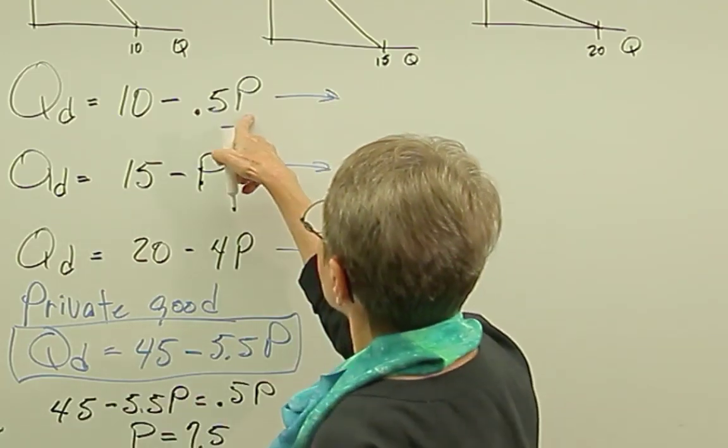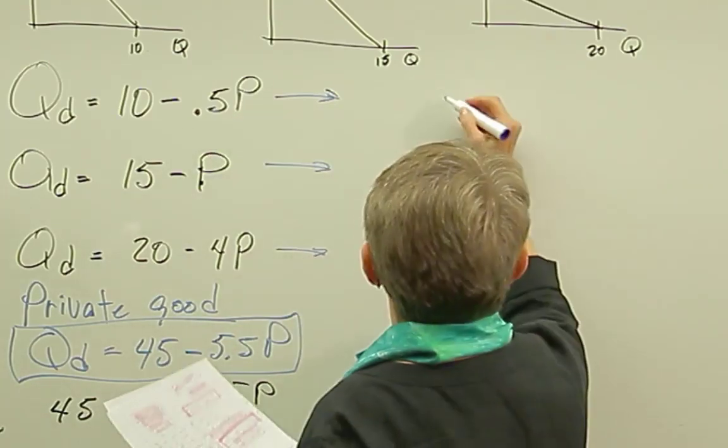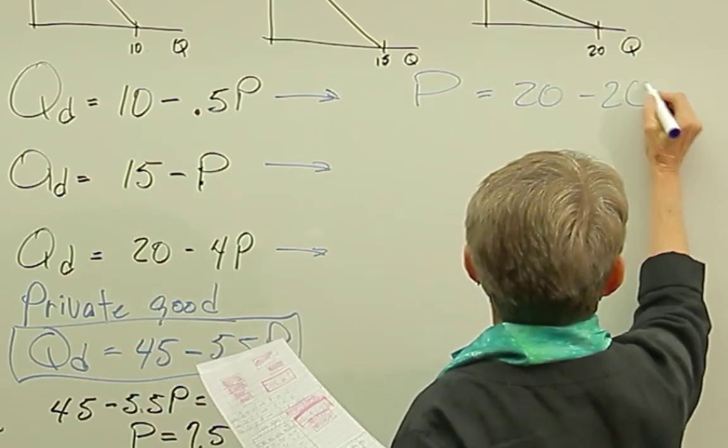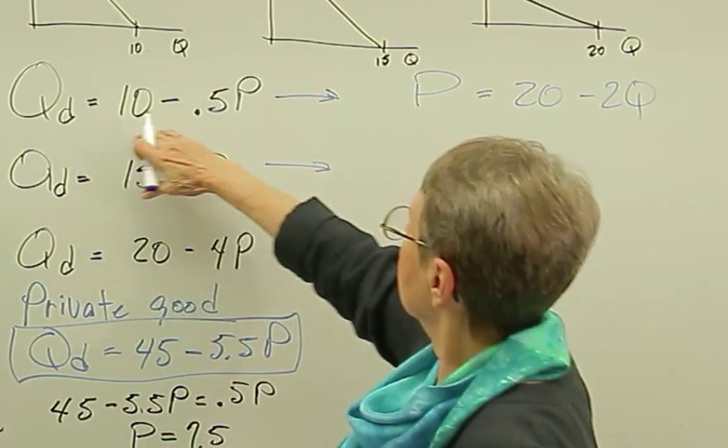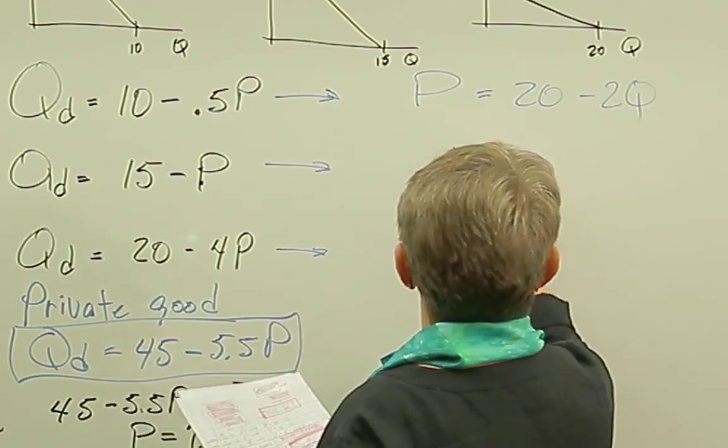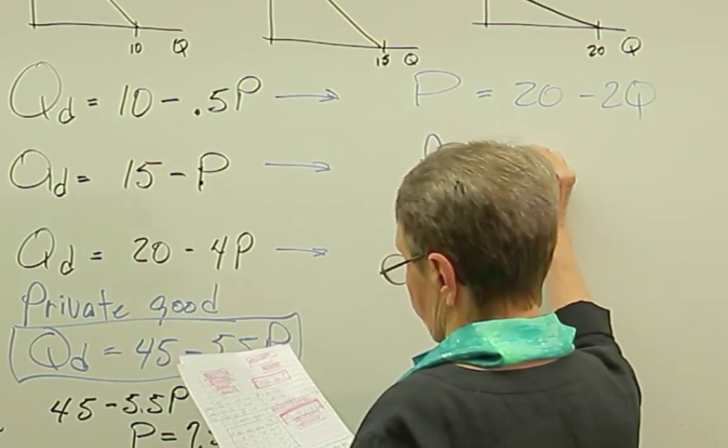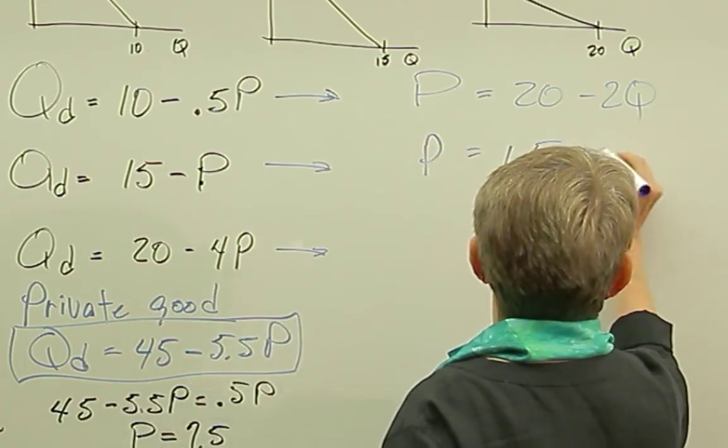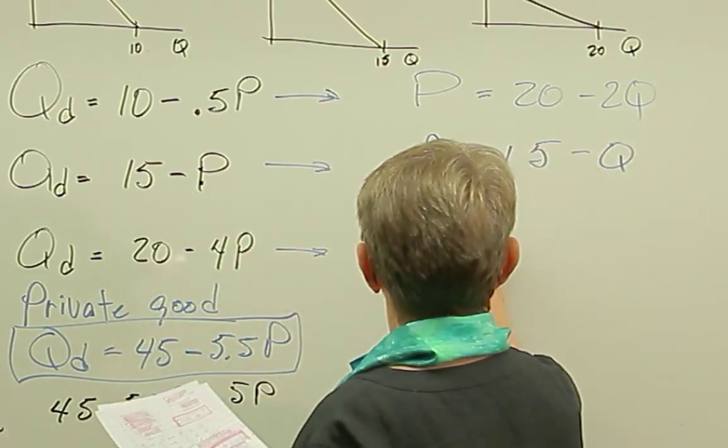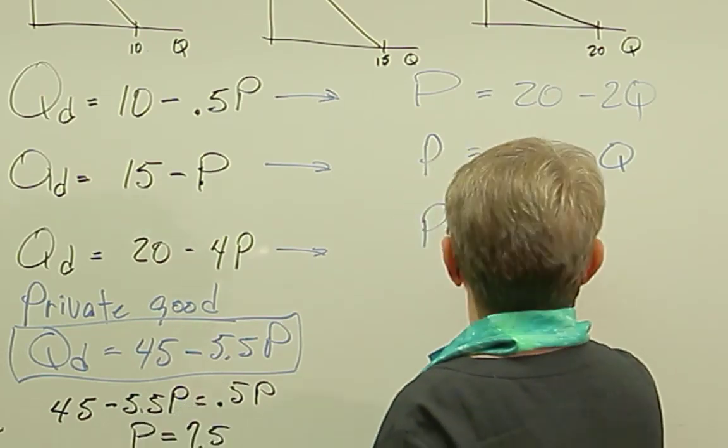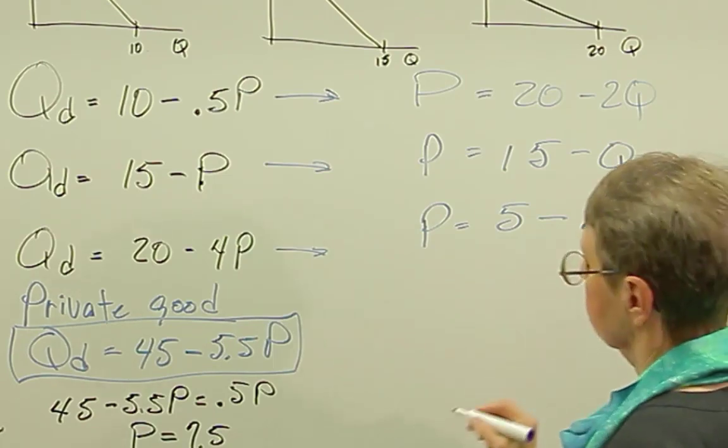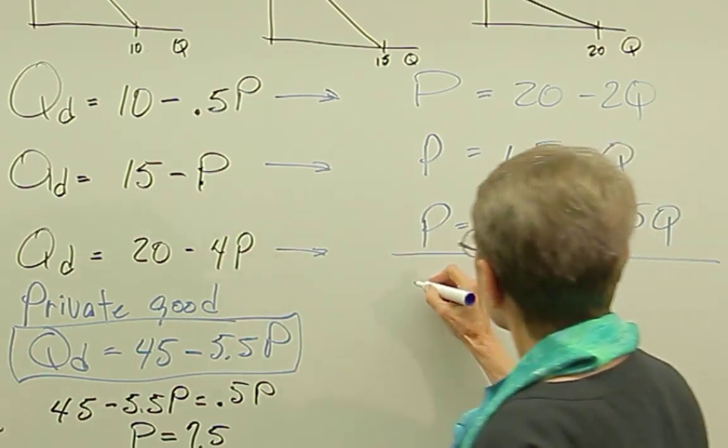So what that means is I'm just going to solve all of these equations for P instead of for Q. So Larry's equation, when we just solve this equation for P, it comes out to be P equals 20 minus 2Q. That's the same equation, just solved for P. When I solve Curly's equation for P, P is equal to 15 minus Q. When I solve Moe's equation for P, it's P equals 5 minus 0.25Q. So, public good.